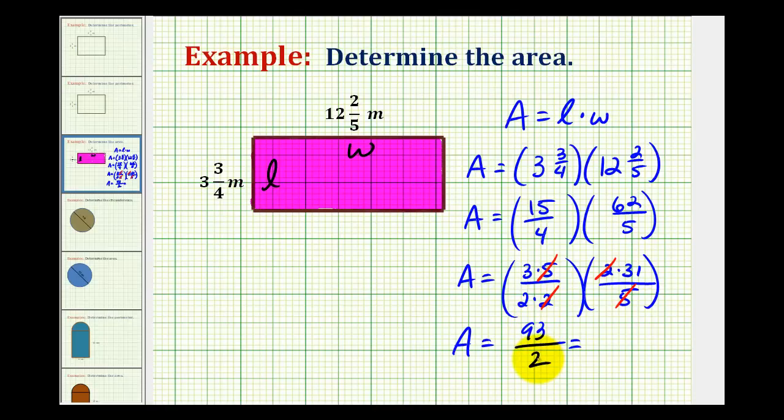Let's go ahead and rewrite this as a mixed number and then include the units of meters squared. So we'll divide 93 by 2 to determine the mixed number. There are 4 twos in 9, 4×2 is 8, subtract, bring down the 3. There are 6 twos in 13, 6×2 is 12. We have a remainder of 1. So our area is 46½ square meters.